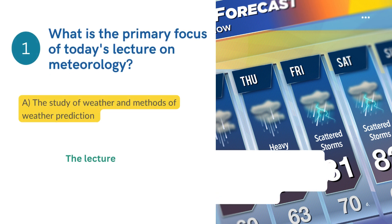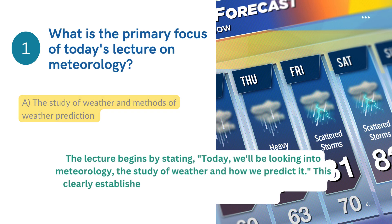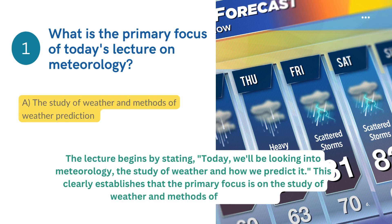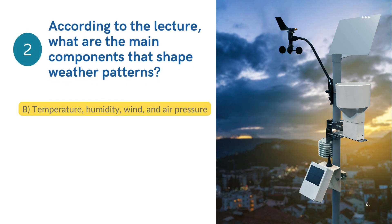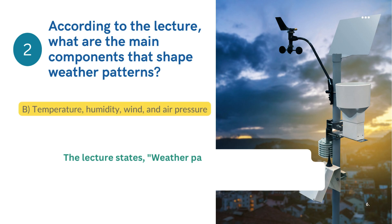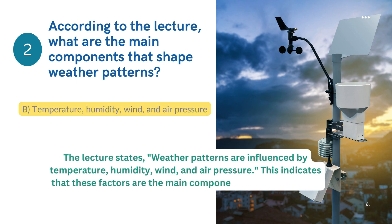Answer 1: The lecture begins by stating, 'Today, we'll be looking into meteorology, the study of weather and how we predict it.' This clearly establishes that the primary focus is on the study of weather and methods of predicting it. Answer 2: The lecture states, 'Weather patterns are influenced by temperature, humidity, wind, and air pressure.' This indicates that these factors are the main components shaping weather patterns.